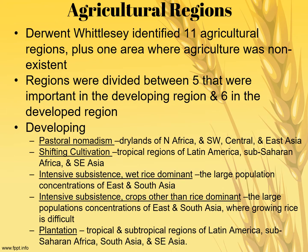You absolutely need to know the 11 different agricultural regions — where they are located and the basic functions of each type. There are five types in less developed countries and six in developed countries. Most found in developing countries, with the exception of plantation agriculture, are subsistence forms. Pastoral nomadism is found in the dry lands of North Africa, Southwest Asia, and Central and East Asia — essentially around the Sahara Desert, Arabian Desert, and Gobi Desert. Shifting cultivation is found in tropical regions along the equator in South America, Sub-Saharan Africa, and Southeast Asia.